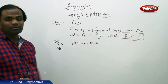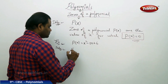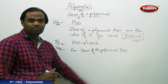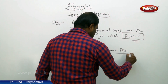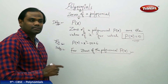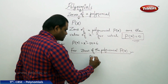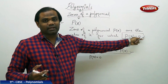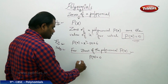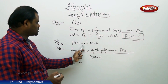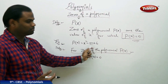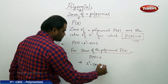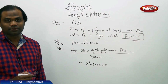For zeros of the polynomial p of x, the condition says p of x must be zero. So the condition is p of x equal to zero. Replacing p of x with the given expression, we get x squared minus 5x plus 6 equals zero.